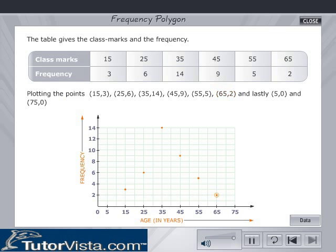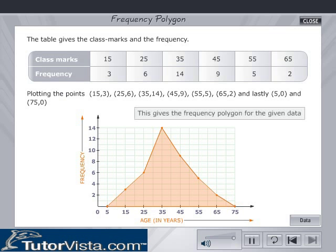and lastly (5, 0) and (75, 0). Mark these points on the graph. Join the points in order. This gives the frequency polygon for the given data.